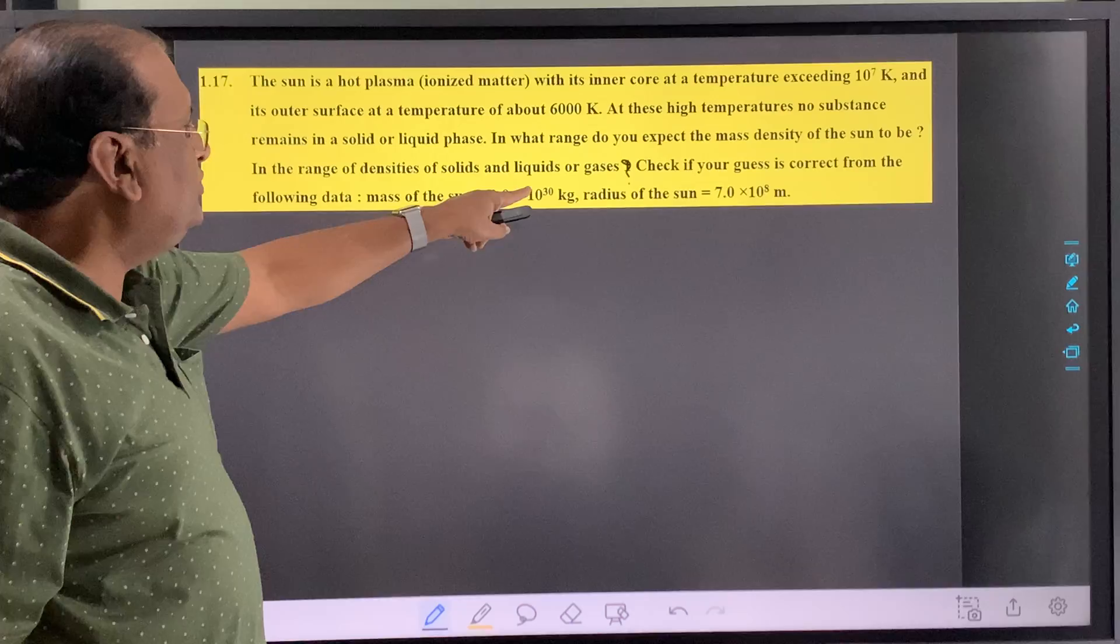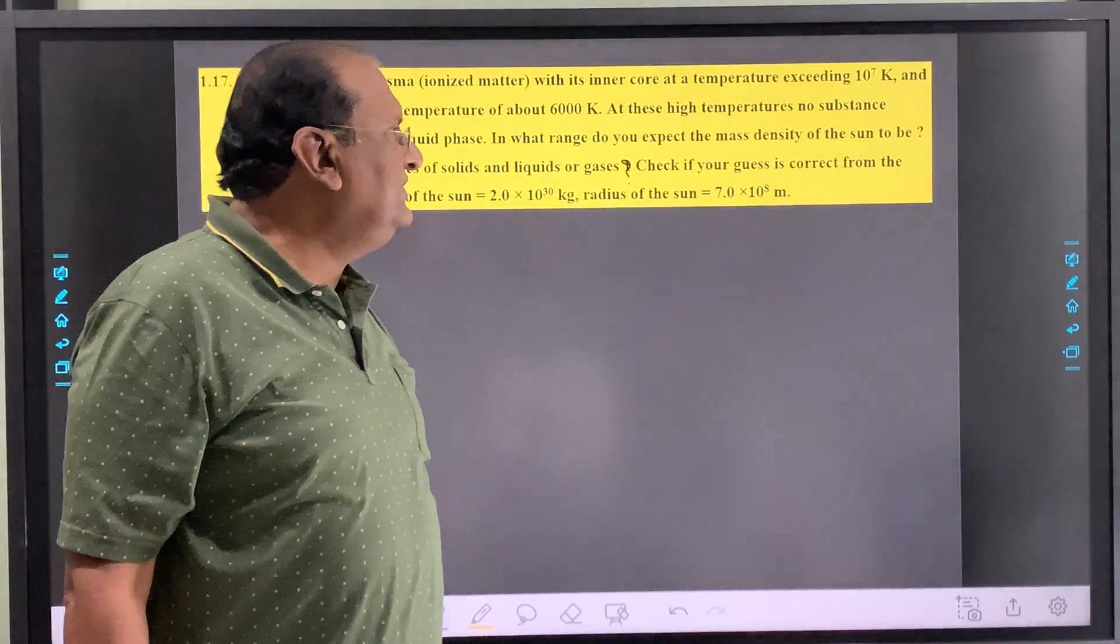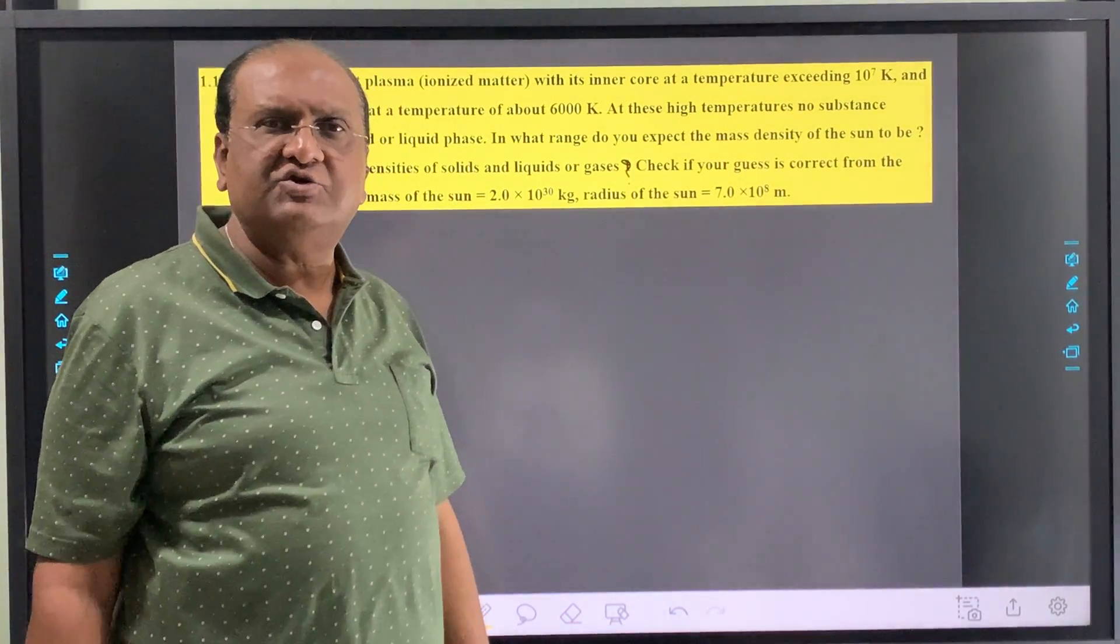Mass of the sun: 2×10^30 kilograms. Radius of the sun: 7×10^8 meters.